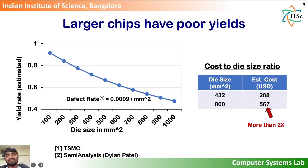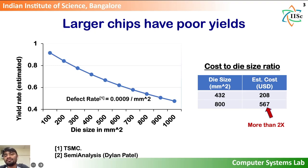However, the growth of GPU sizes is not sustainable. The graph on the left shows the estimated yield at various die sizes for the TSMC 7nm process. As the chip or die size grows, the yield — that is, the amount of working silicon per silicon wafer — reduces. Lower yield implies wasted dies and thus costlier GPUs. A recent estimate from SEMI analysis shows that manufacturing a larger die is much costlier than two smaller dies of approximately half the size. Thus, it is not possible to continue pushing die sizes further in a cost-effective manner.